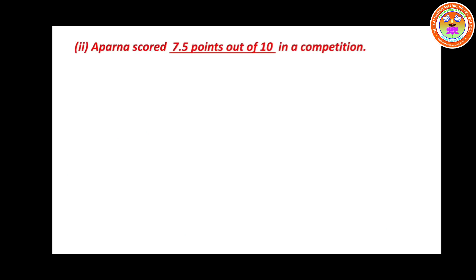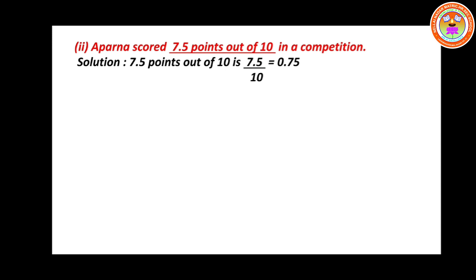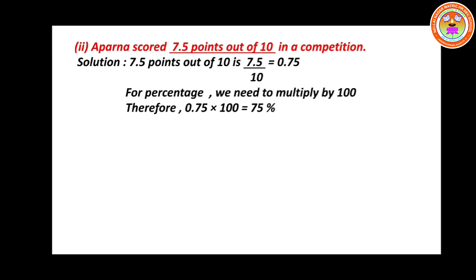Subdivision 2: Aparna scored 7.5 points out of 10 in a competition. As a fraction, that is 7.5 divided by 10 equals 0.75. To find the percentage, multiply by 100: 0.75 into 100 equals 75%. Therefore, Aparna scored 75% in the competition.